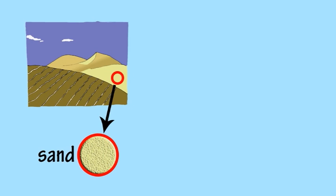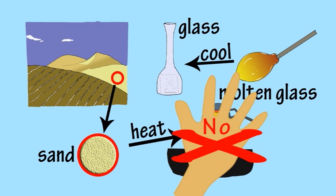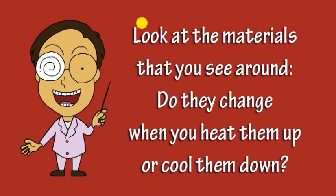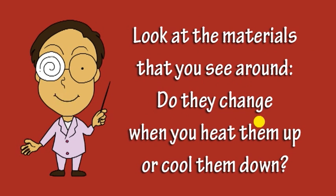You can make molten glass by heating up some sand, but be careful not to touch it or you'll burn your hand. Look at the materials that you see around — do they change when you heat them up or cool them down?